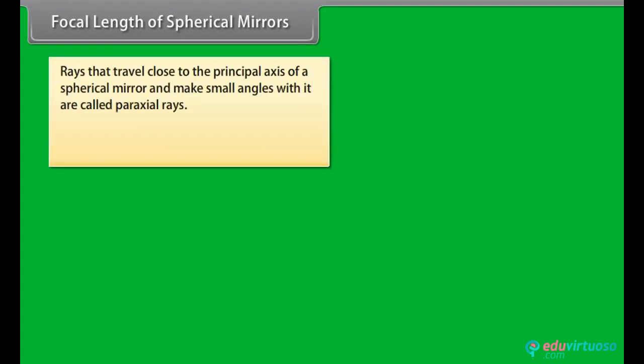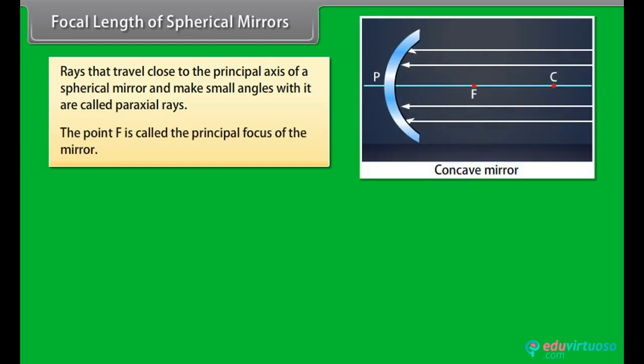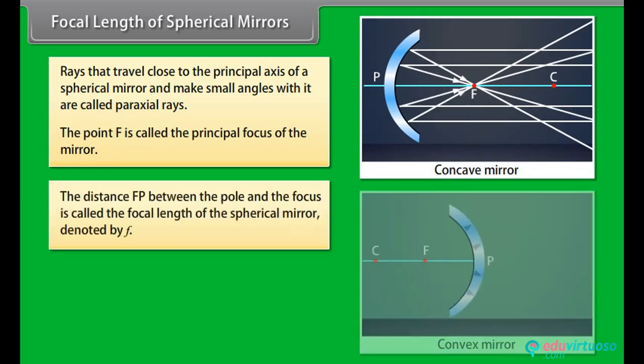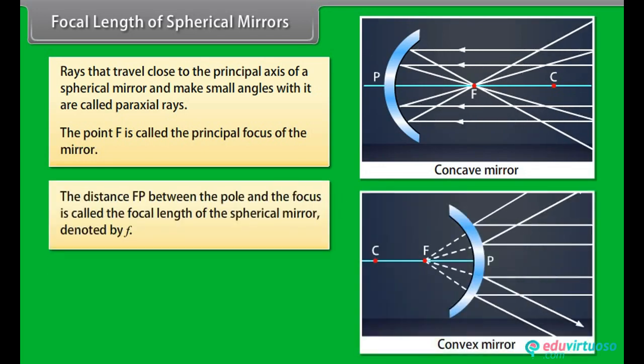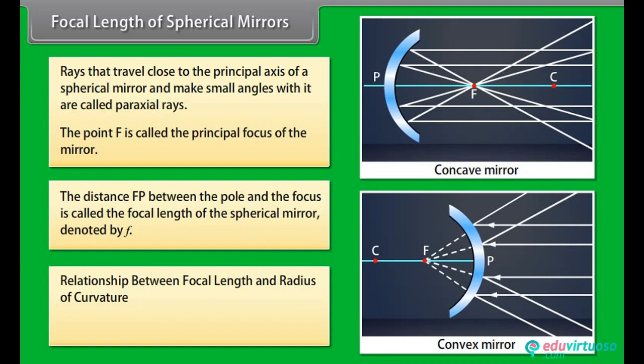Rays that travel close to the principal axis of a spherical mirror and make small angles with it are called paraxial rays. The point F is called the principal focus of the mirror. The distance FP between the pole and the focus is called the focal length, denoted by f. The relationship between focal length and radius of curvature is: f = R/2.